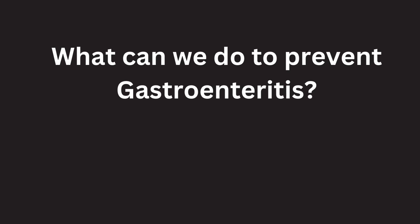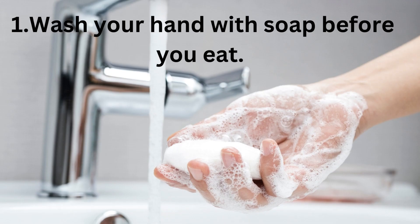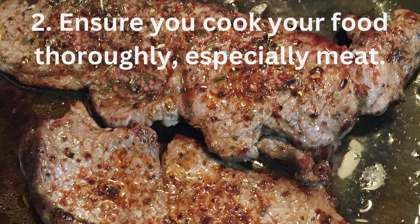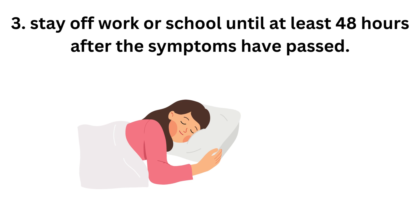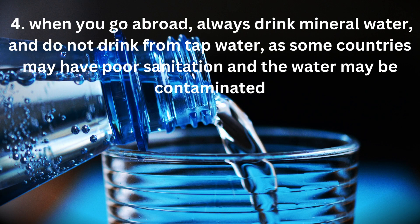What can we do to prevent gastroenteritis? One, wash your hands with soap before you eat. Two, ensure you cook your food thoroughly, especially meat. Three, stay off work or school until at least 48 hours after the symptoms have passed. Four, when you go abroad, always drink mineral water and do not drink from tap water, as some countries may have poor sanitation and the water may be contaminated.